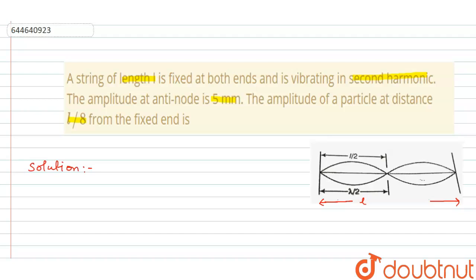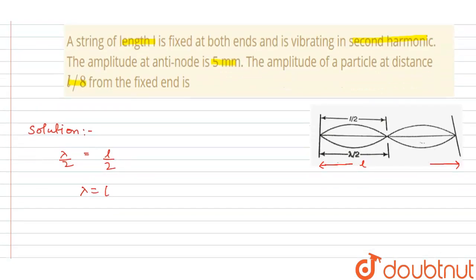We can say that as the wavelength is half, lambda by 2 is equal to L by 2, or we can say that lambda is equal to L. As the wave is stationary, the string is fixed at both ends.